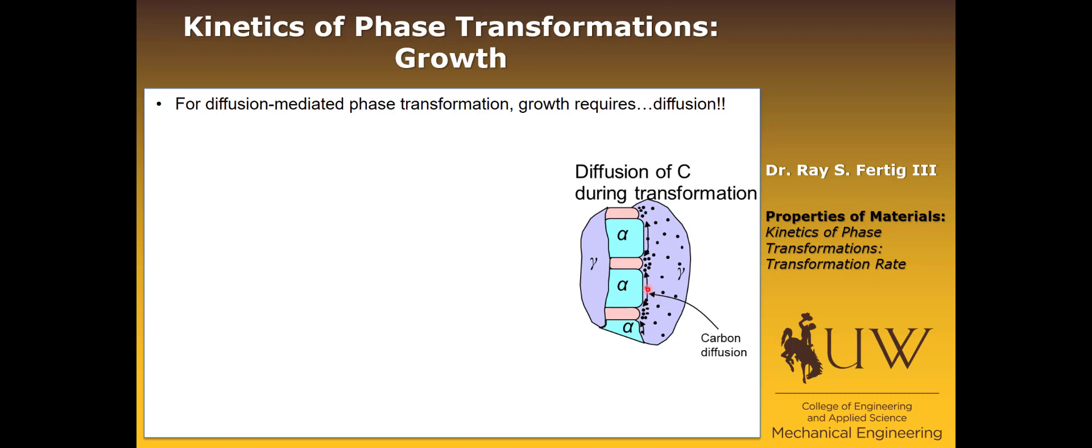the carbon has to diffuse away from the alpha phase and into the cementite phase. So we are going to require diffusion through this gamma phase. So that's one component of diffusion.